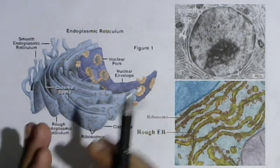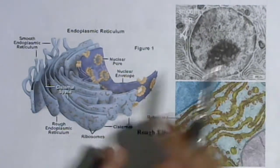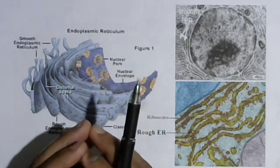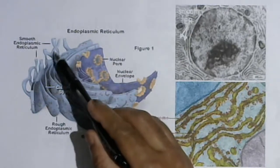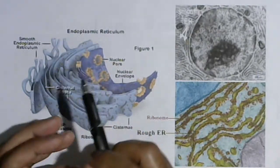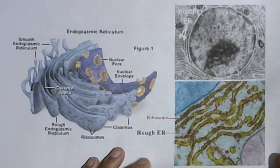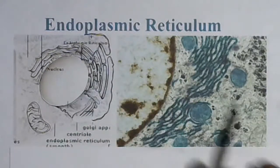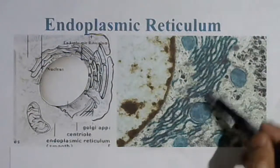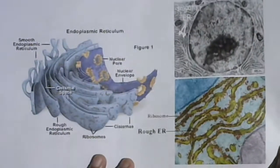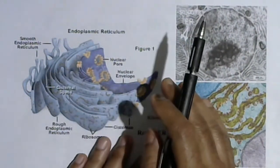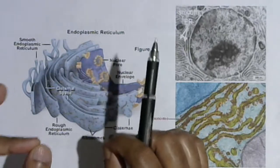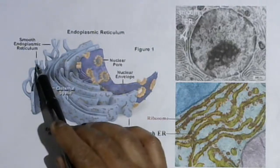Endoplasmic reticulums are classified into two types: smooth endoplasmic reticulum and rough endoplasmic reticulum. The tubular elements and in most cases the vesicle elements are generally smooth type. Smooth endoplasmic reticulums are those types in which ribosomes are absent from their membrane surface.